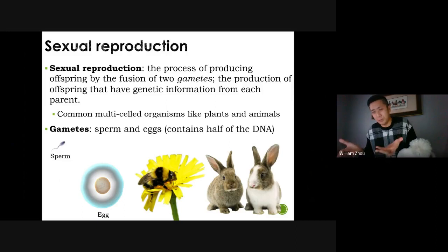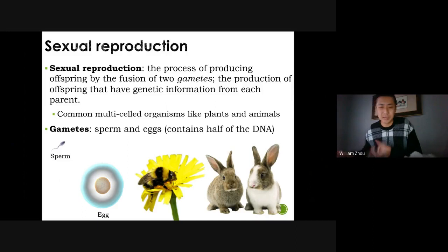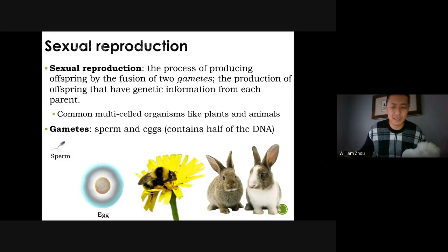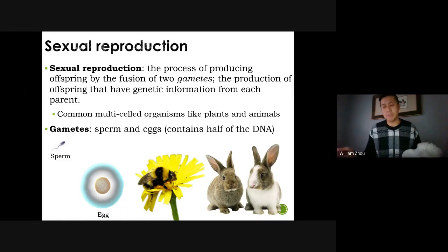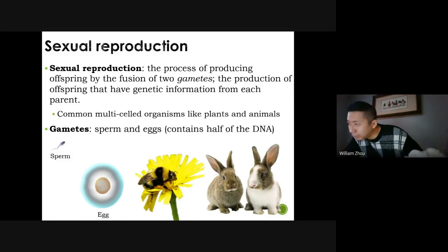Animals go through a lot of effort to reproduce. Insects — males sometimes grab another fly, wrap it up, and give it to the female as a gift. You have to woo the female, which takes energy. But the benefit of genetic variety is so high that sexual reproduction is a viable strategy.